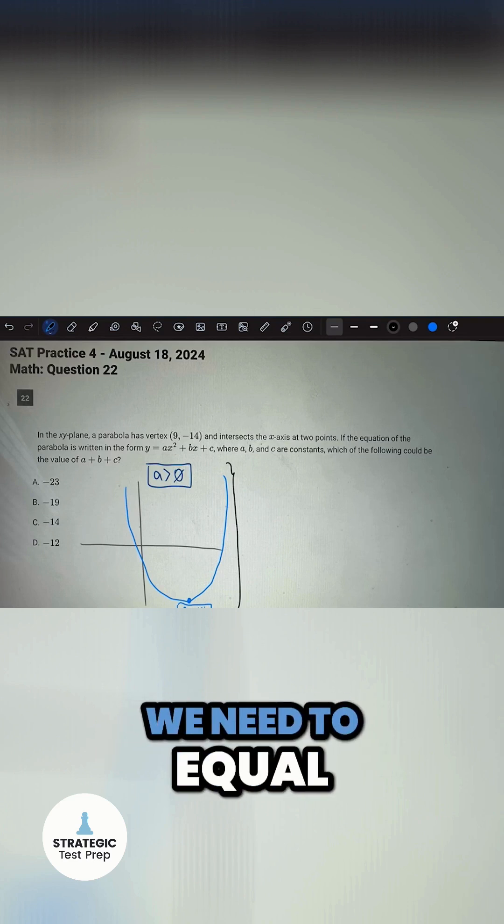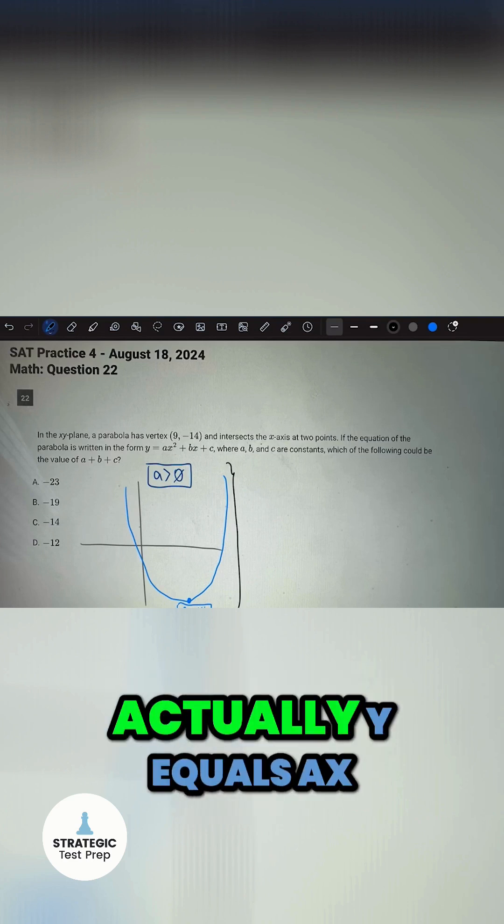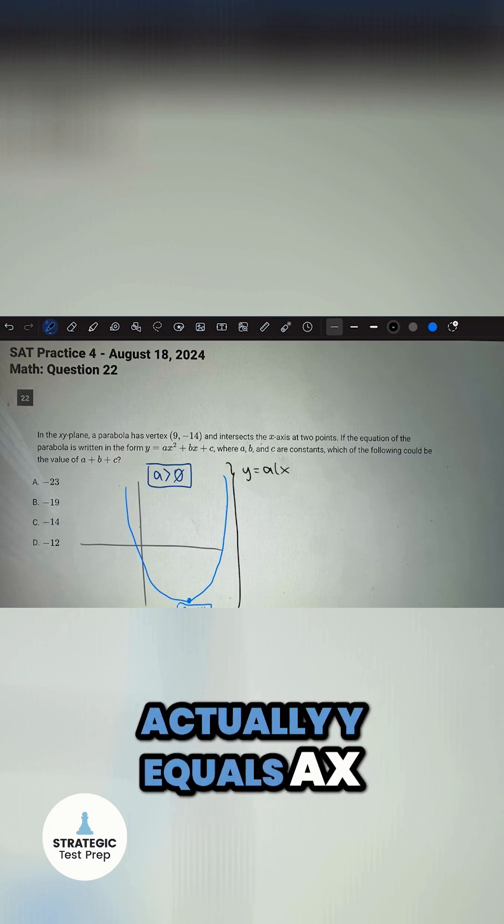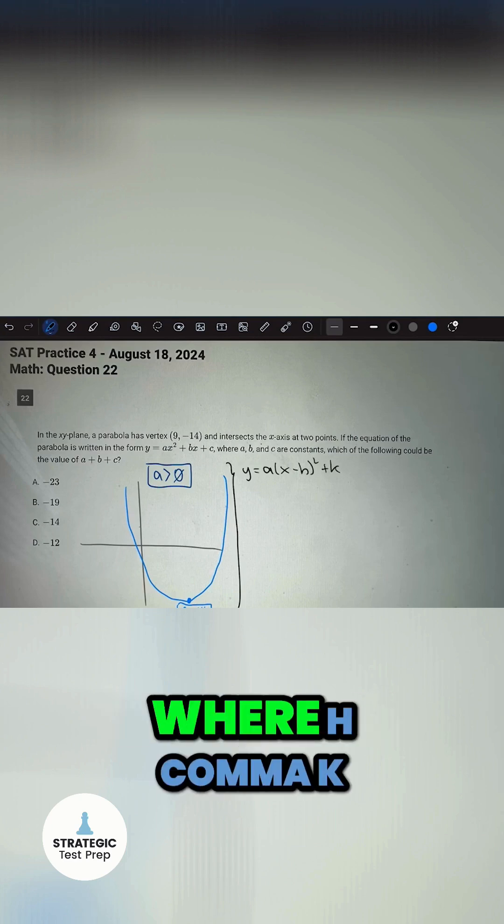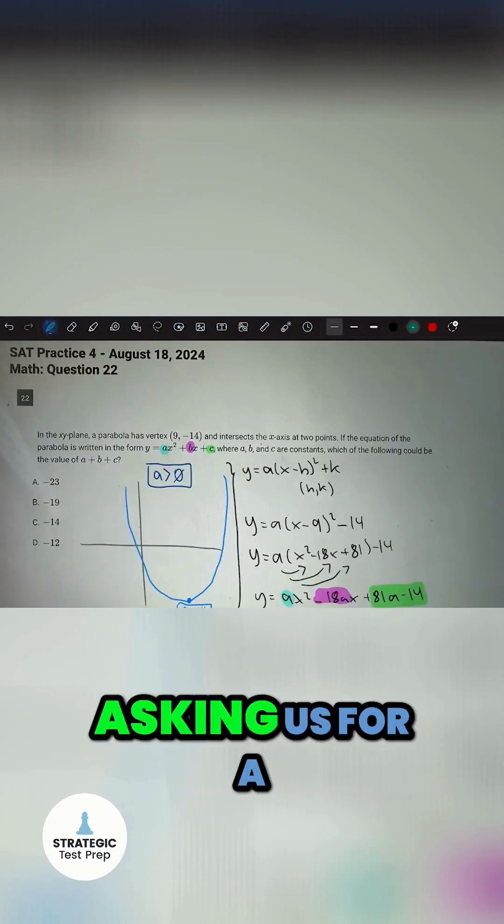We need to use vertex form and equate it to standard form. Vertex form is y = a(x - h)² + k, where (h, k) is the vertex. Remember, the question is asking us